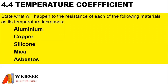What will happen to the resistance of each of the following materials as its temperature increases? Aluminium and copper are conductors, therefore they have a positive temperature coefficient. Silicon, mica and asbestos are insulators and therefore they have a negative temperature coefficient.